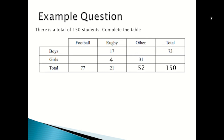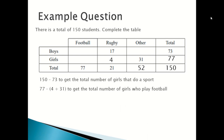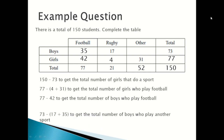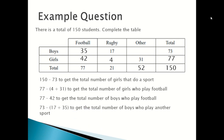Next, you do 150 minus 73 to get the number of boys, which is 35. To get the total number of girls who play football, that's 42. Then you do 77 minus 42 to get the number of boys who play football, which is 35. Lastly, you do 73 minus (17 plus 35) to get the total number of boys who play another sport, which is 21.